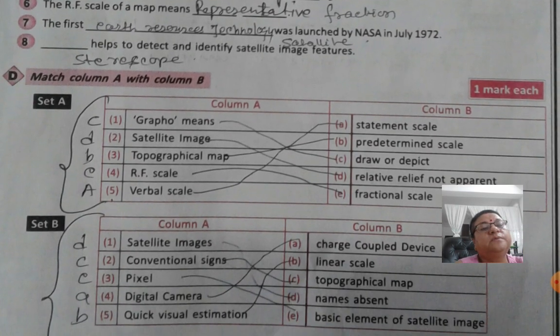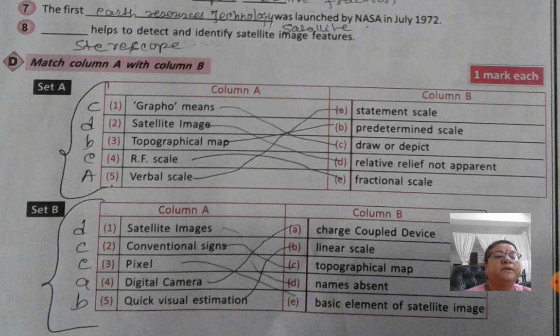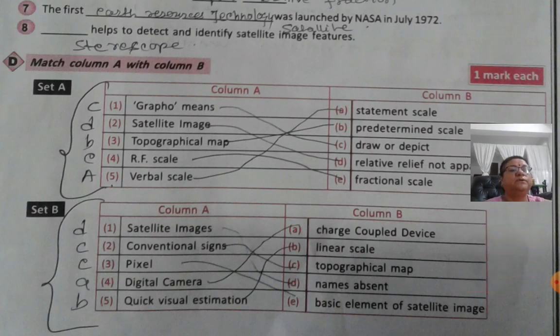And the fill in the blanks. Number 1 is C, Number 2 is D, Number 3 is B, E, A, and D, C, E, A, B. And you match the column here, and you can do it.